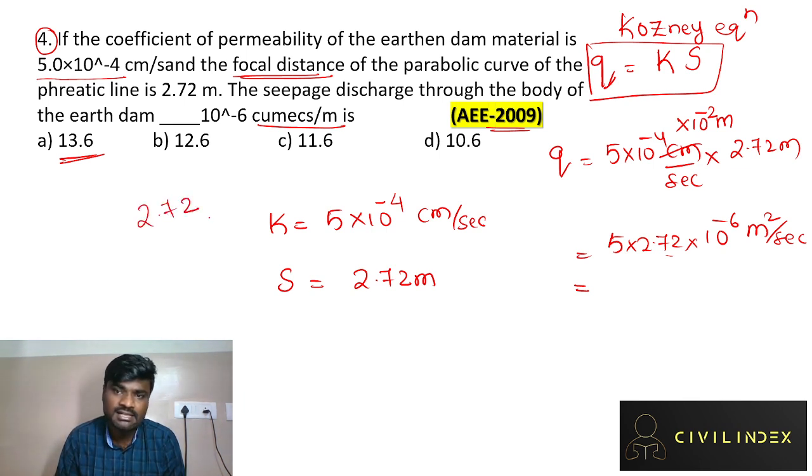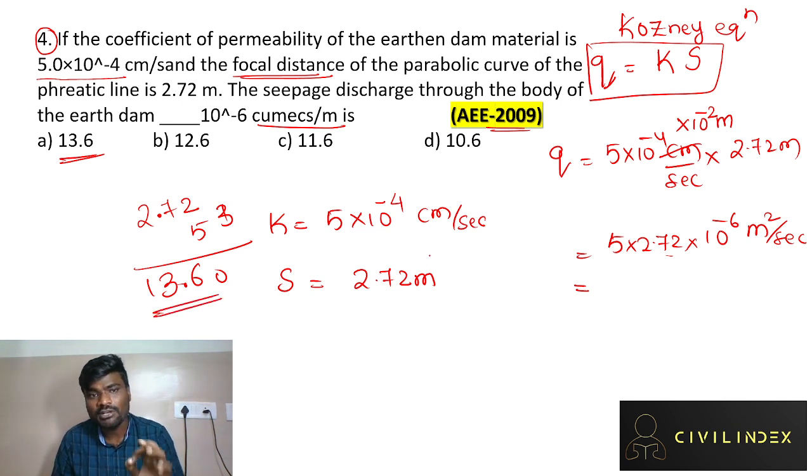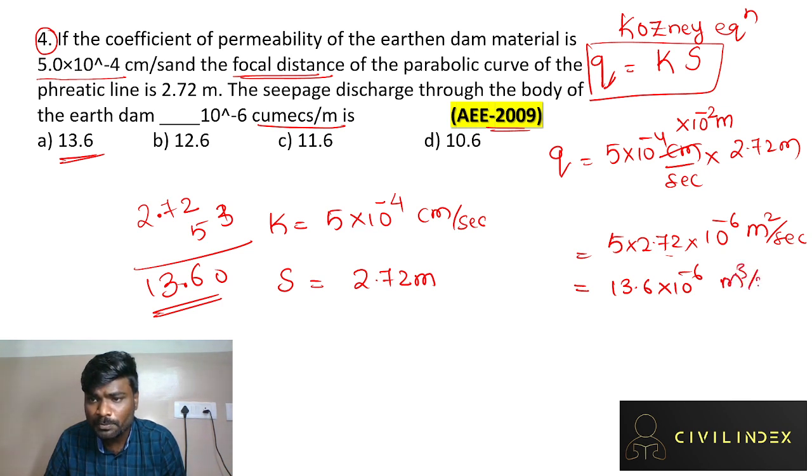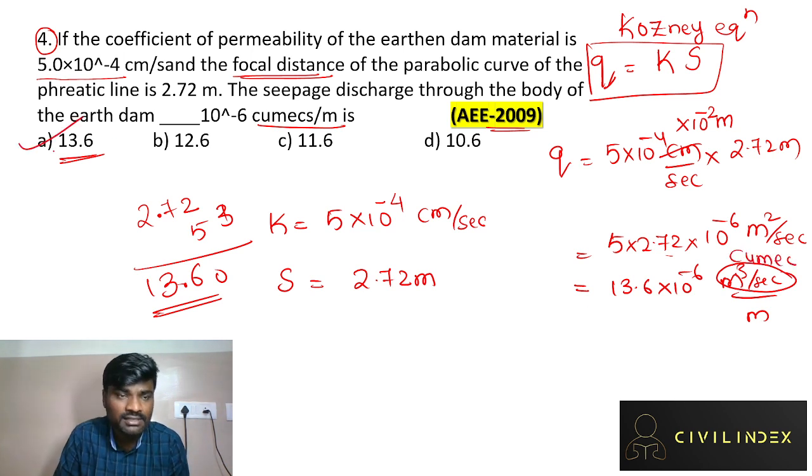So one option is 13.6. If you already know the calculation, you can do the values. Do 5 times 3, which is 15, but let me recalculate: 5 times 2 is 10, 5 times 0.72 is 3.6, total is 13.60. So the answer is 13.6 into 10 to the power of minus 6 cubic meters per second. Your answer is 13.6.